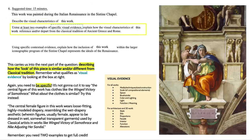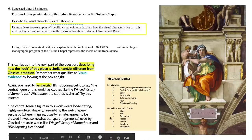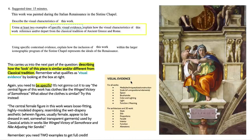This kind of leads us to the next part of the question, which is describing how the look of this piece is similar to or different from classical tradition. Remember that you need to be specific with visual evidence. I've had a lot of students on exams make vague connections between two or more works of art without describing what about them is similar. You can't just say 'the central figure has clothes like the Winged Victory of Samothrace' — you need to say the central female figure wears loose-fitting, highly modeled drapery resembling the wet drapery aesthetic, where figures appear to be dressed in wet, somewhat transparent garments, used by classical artists in works like the Winged Victory of Samothrace and Nike Adjusting Her Sandal.